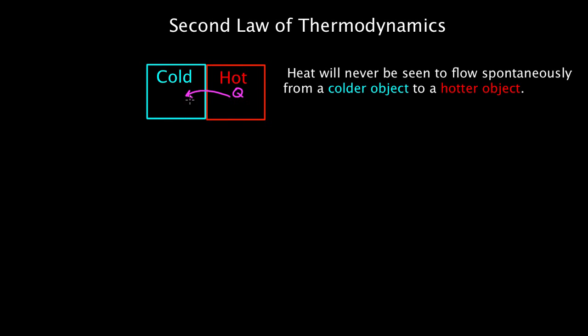You can force heat from a cold object to a hot object like we do with a refrigerator or a freezer, but that's using a heat pump. And those refrigerators and freezers are doing work to force that heat from the cold region into the hot region. It won't do it spontaneously by itself. You've gotta force it to do it. So what the second law says, or at least one version of it, is that that process will never be seen to happen in reverse. The heat will never be seen to flow from the cold object to the hot object.